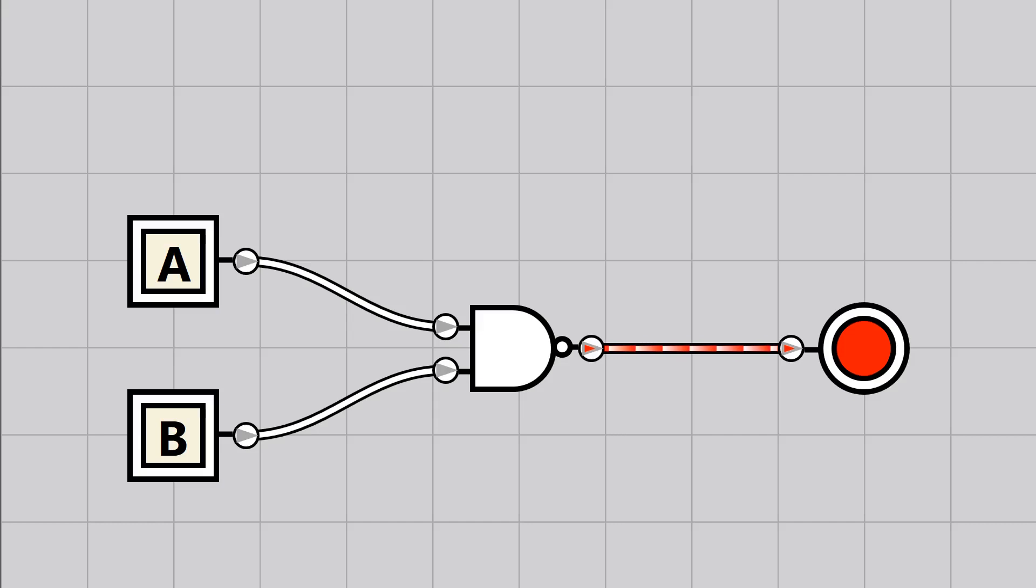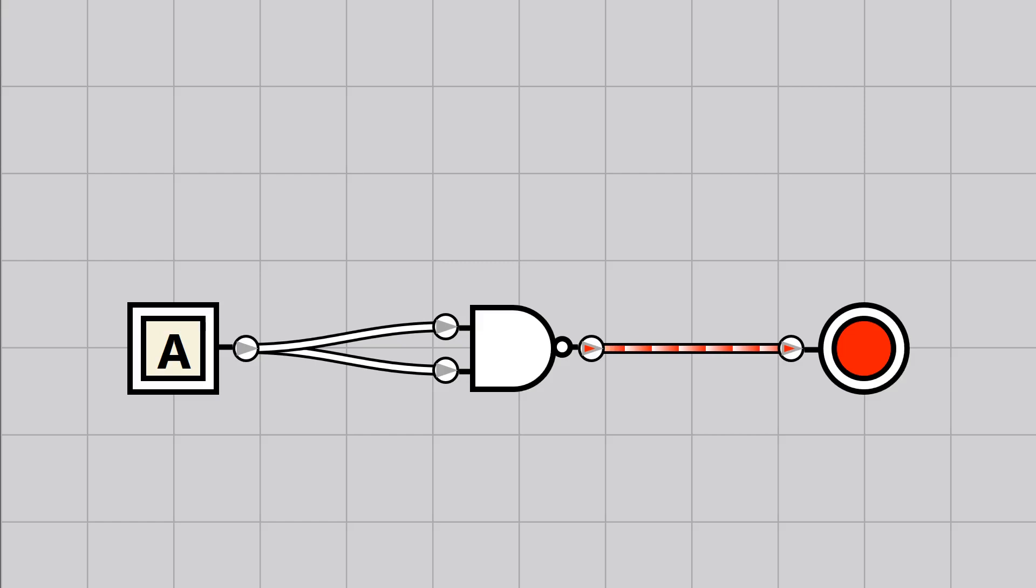If we take the inputs from a NAND gate and tie them together, we change how it behaves a little. Now we only have one input and one output. We'll test this new configuration and write down what we observe in another truth table. This one is pretty simple. If the input is off then the output is on, and if the input is on then the output is off.